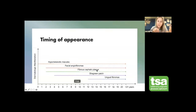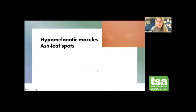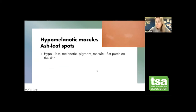Starting with hypomelanotic macules, also called ash leaf spots. Breaking down the name: hypo means less, melanotic means pigment, and macula is a flat patch on the skin. So they are paler, completely flat patches — if you close your eyes and run your fingers over them, they're flat, just a color change in the skin.